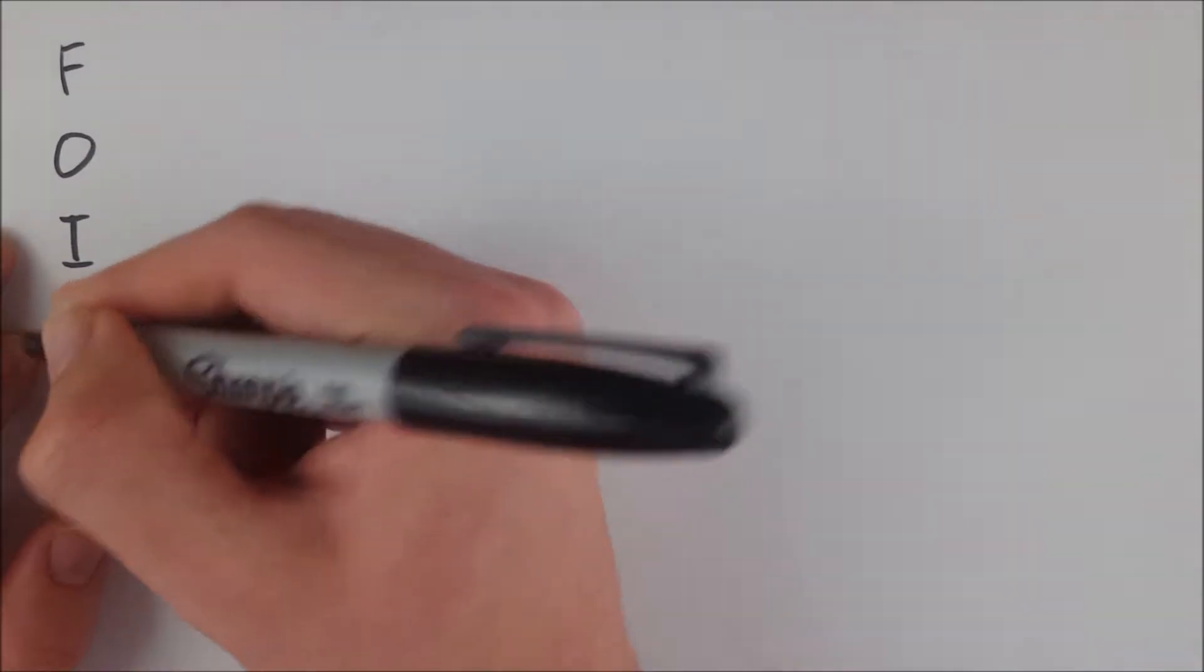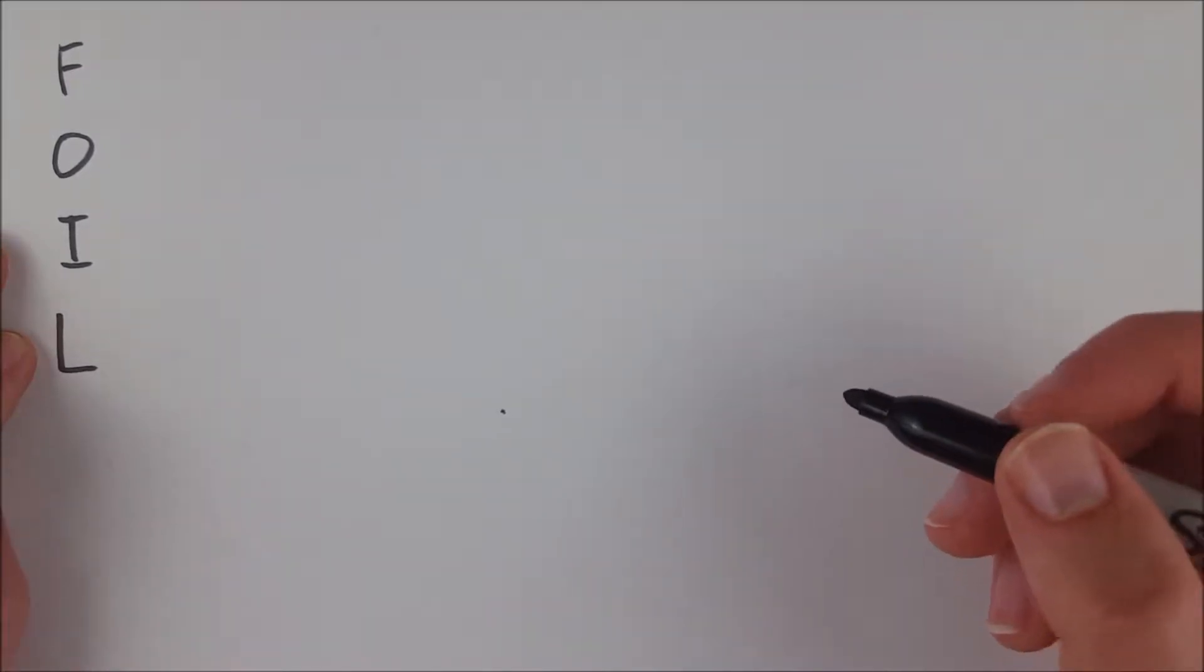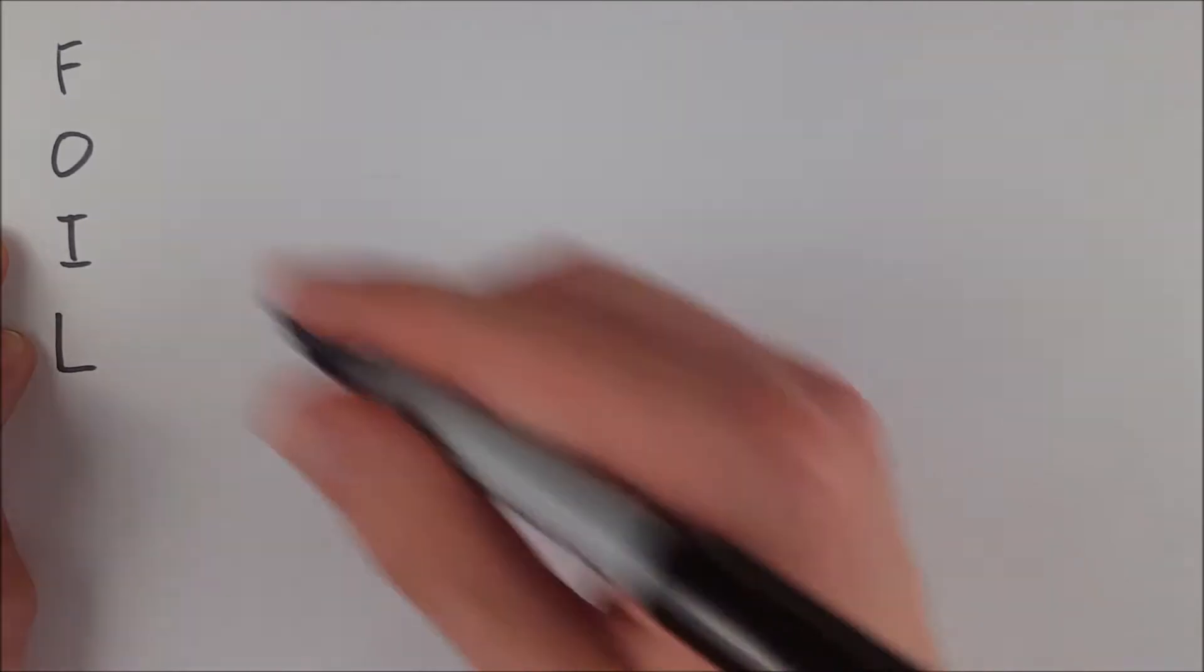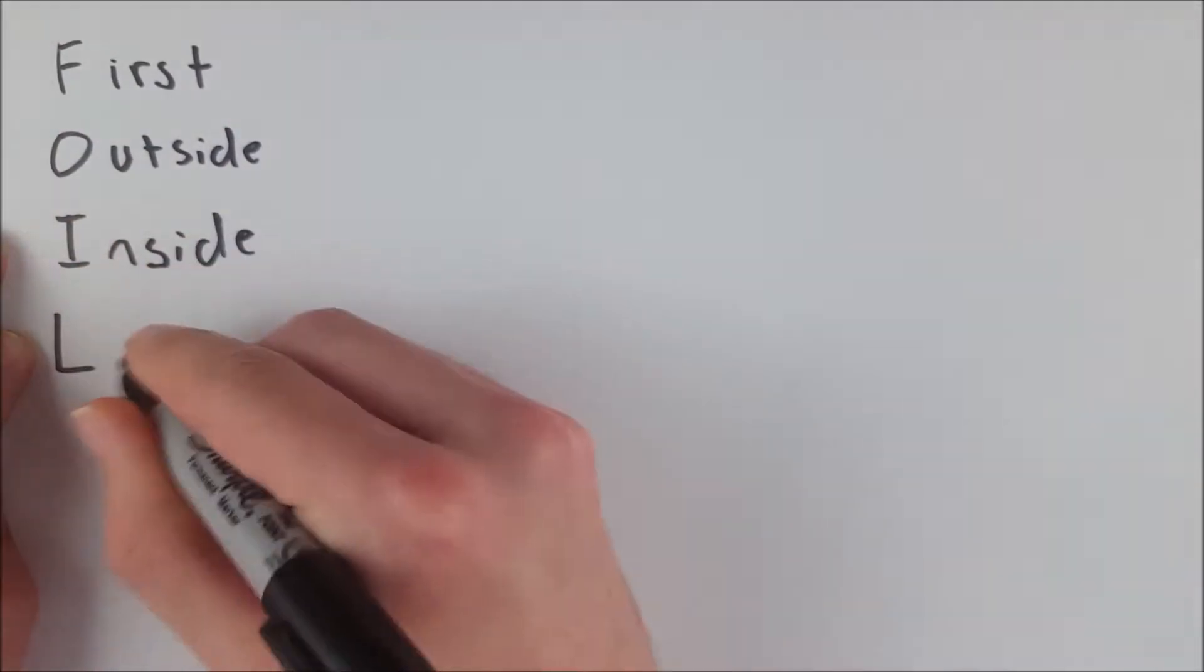What is it? What does it stand for? How do you use it? FOIL is a mnemonic used to help remember how to properly multiply binomials, and it stands for First, Outside, Inside, Last.